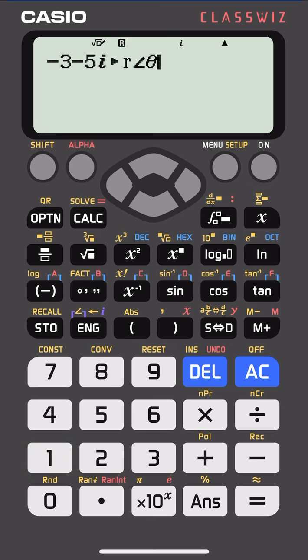And you get the modulus and the argument of that complex number. Modulus is square root of 34 and after the angle sign you see the argument which is minus 2.11. My calculator is in radian mode right now so it's giving me an answer in radians.